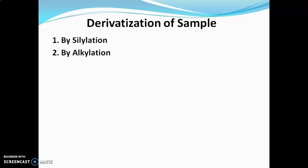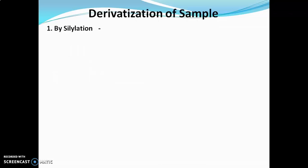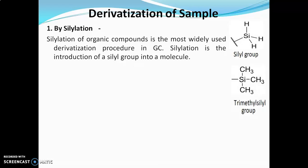There are various methods of derivatization. The first method is silylation, the second is alkylation, the third is acylation, and the fourth is chiral derivatization. The first method of sample derivatization is the silylation method. Silylation of organic compounds is the most widely used derivatization procedure in gas chromatography. Silylation is the introduction of a silyl group into sample molecules.